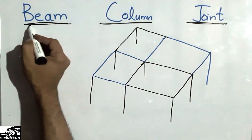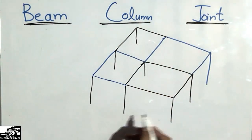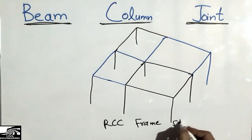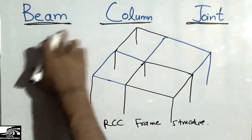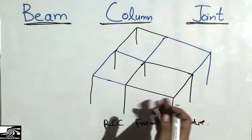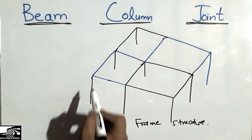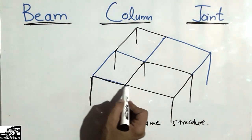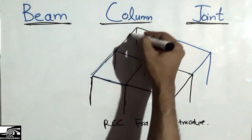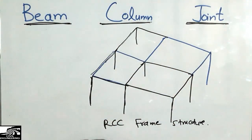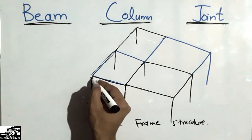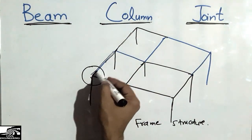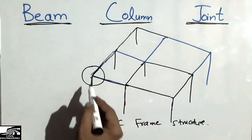Every RCC structure has the beam-column connection. This is an RCC frame structure. The columns are the vertical compression members and the beams are the horizontal members. When the beam and column reinforcement meet at the same position, we call it the beam-column joint.